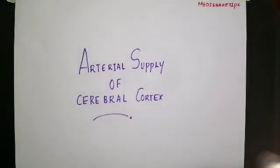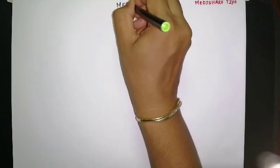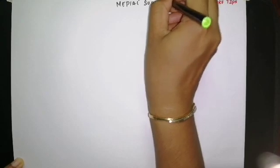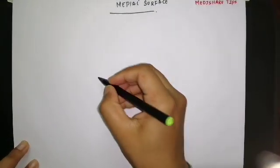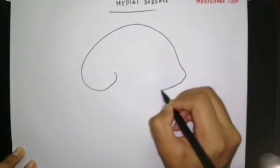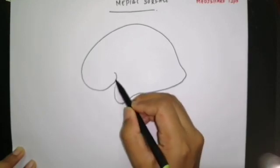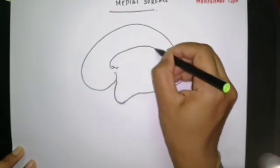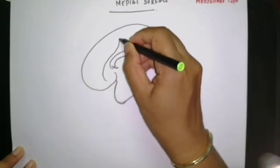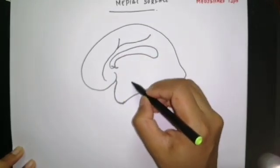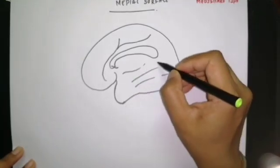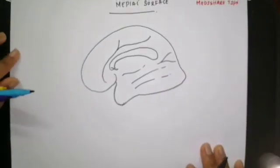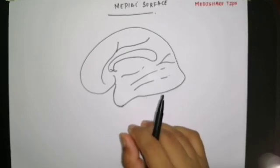Now we move on to the medial surface. We will draw the diagram of the medial surface of the brain and discuss the arterial supply of the cerebral cortex here.